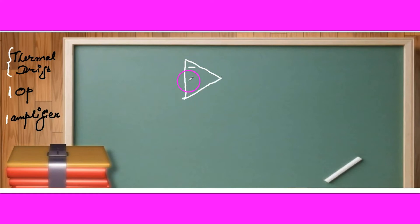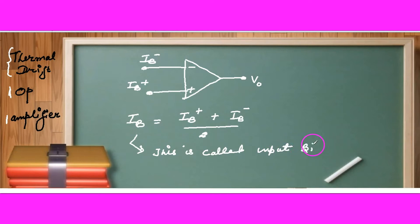In the op amplifier, minus is inverting terminal, plus is non-inverting terminal. Here an output voltage is V0, bias current IB minus, IB plus bias current. Bias currents are approximately same but may be unequal. So we find the average bias current: IB plus plus IB minus divided by 2. This is called average input bias current.